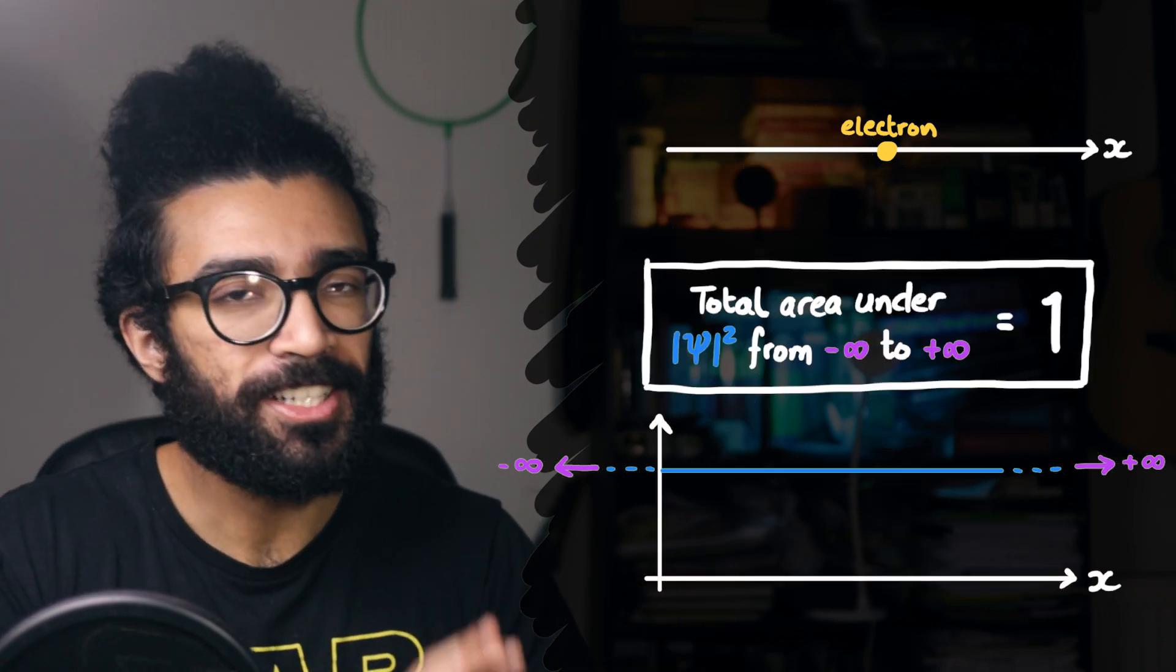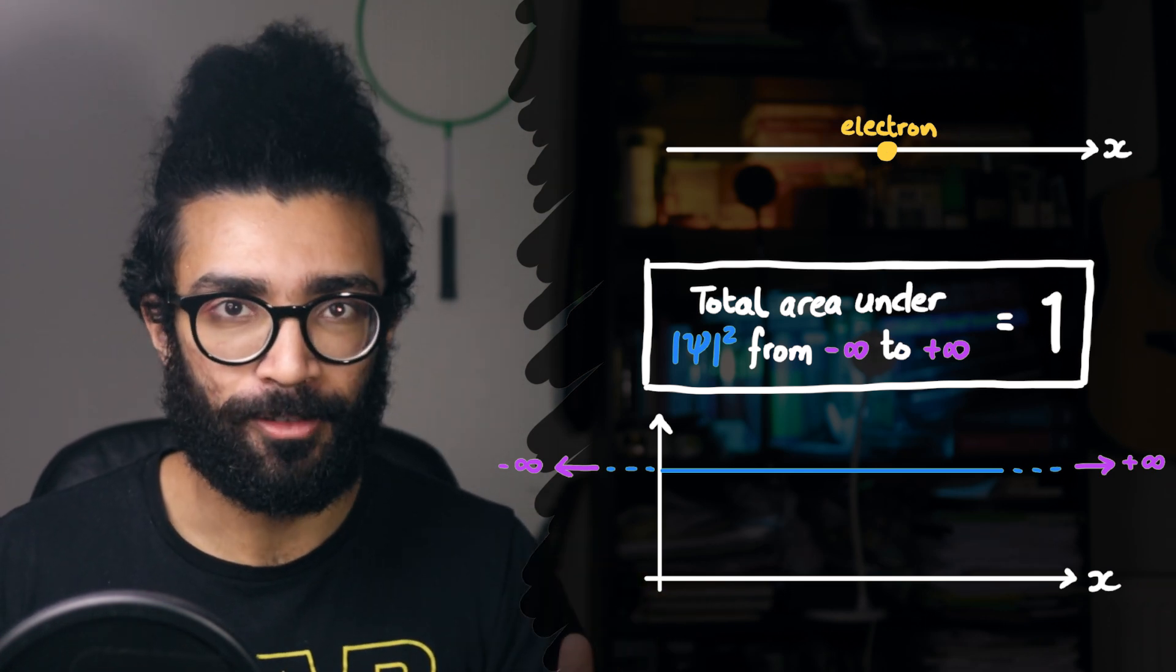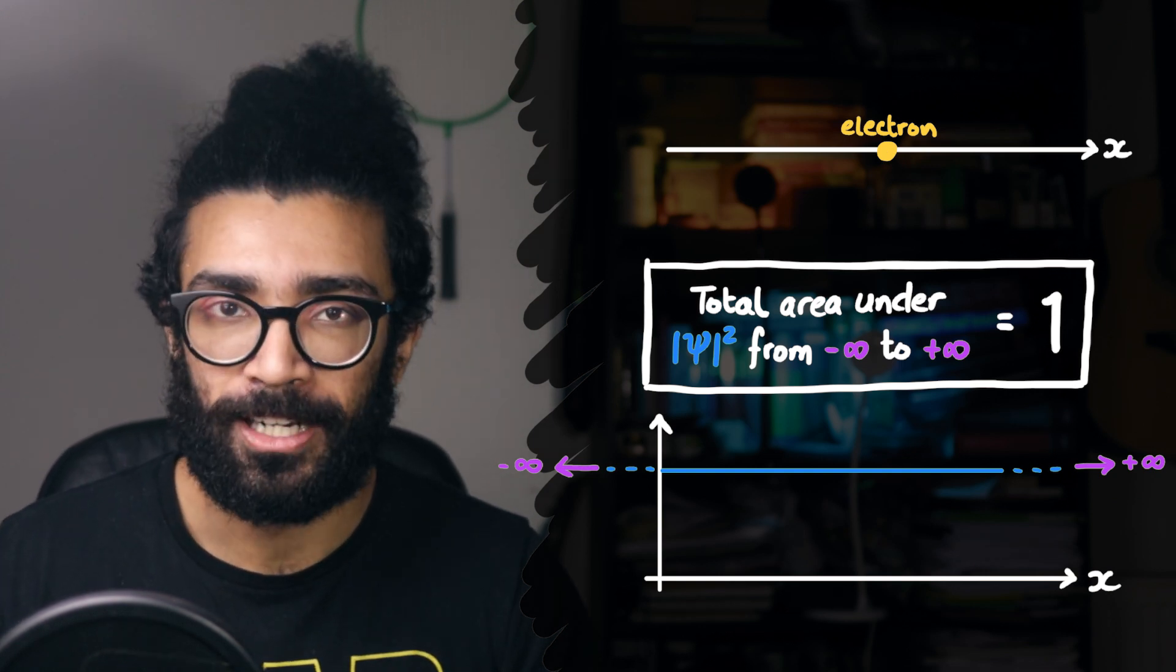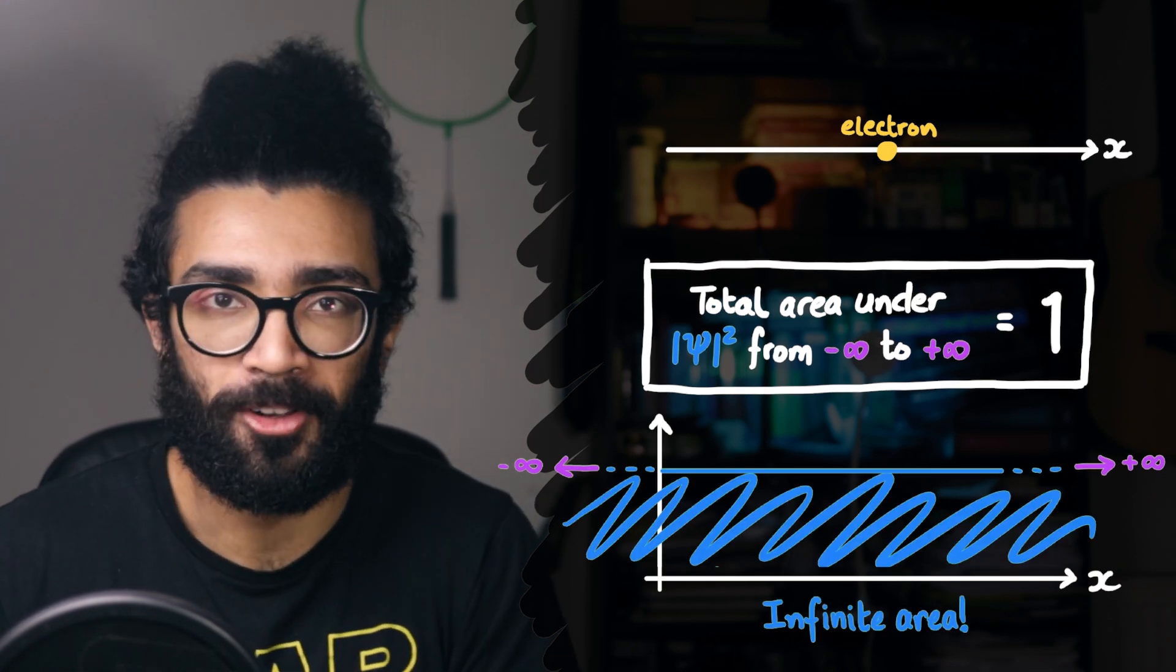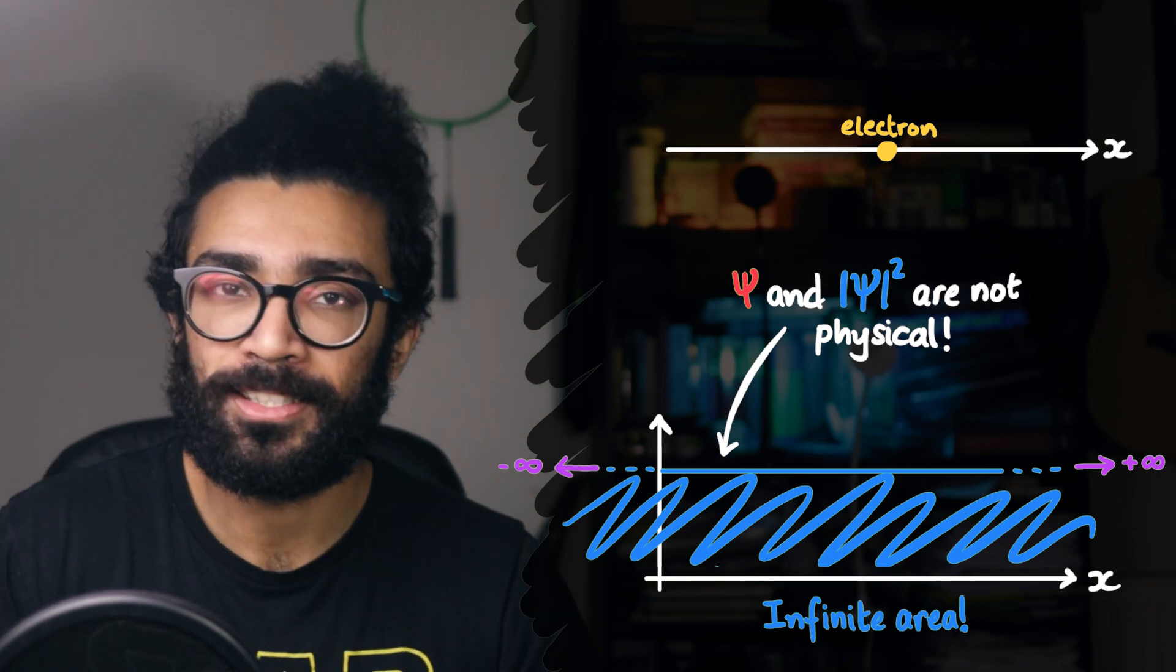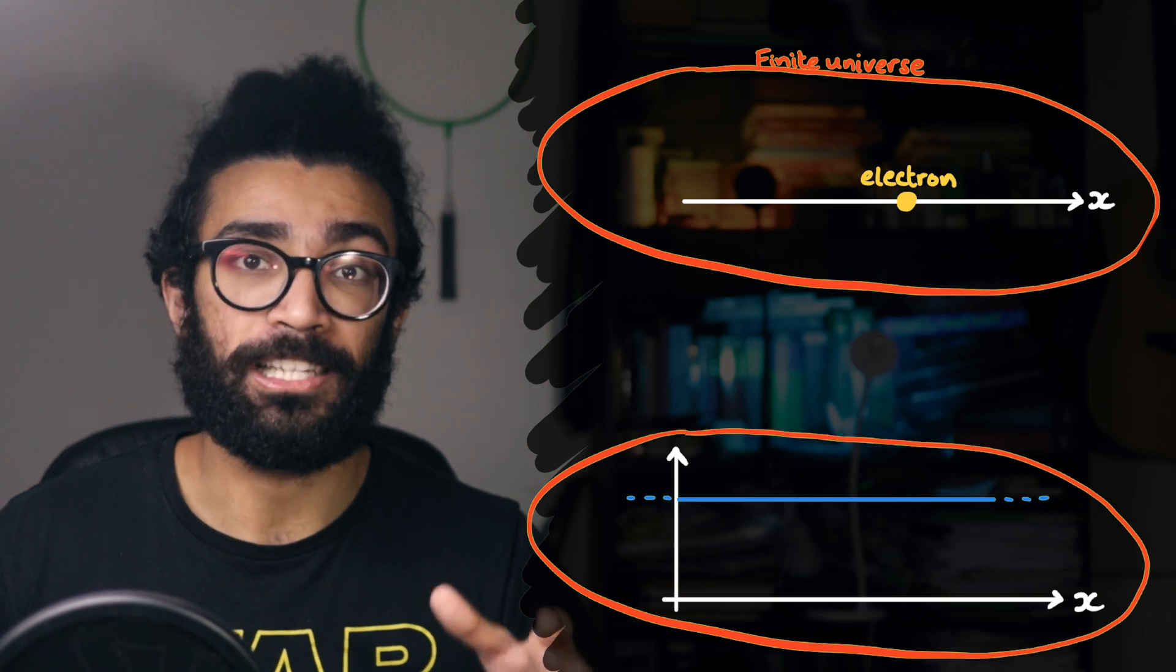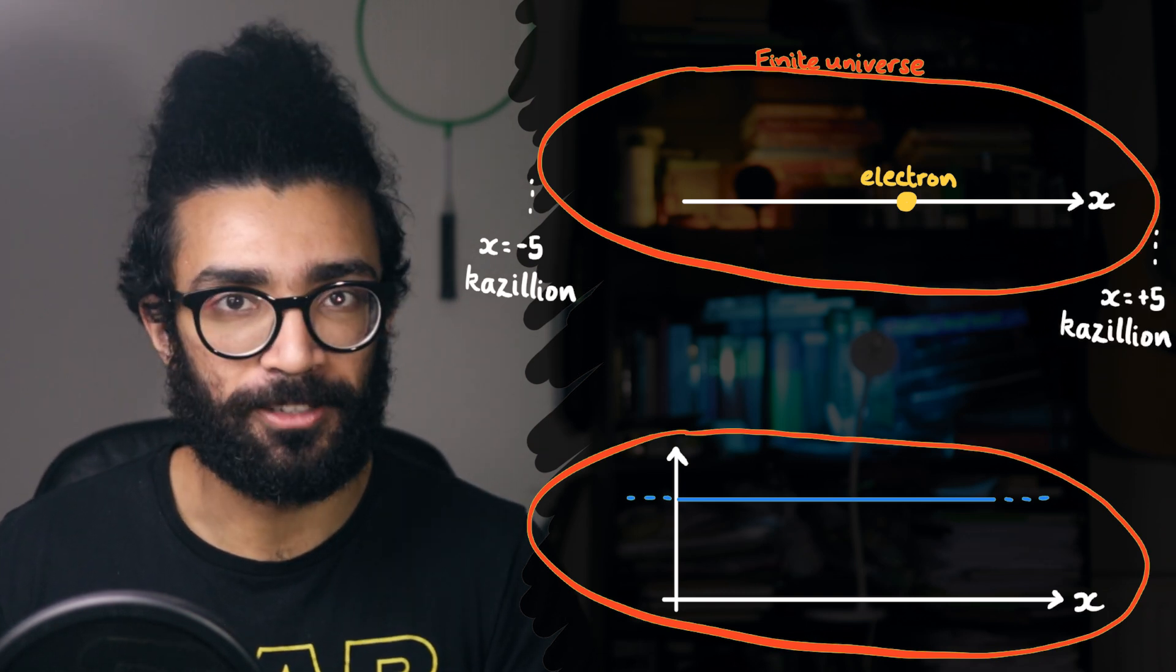Here's where we have a slight problem. That condition that we just found out, the total area underneath our graph, must be equal to 1 if we're looking at it all the way from negative infinity to positive infinity, cannot hold for this particular wave function or wave function squared. Because if this flat line goes on forever in both directions, to the left and to the right, then the area underneath that graph is going to have to be infinite, and infinity can't be equal to 1. Now, the good thing is that this particular wave function and wave function squared are not physical. It's not a good description of anything in our real-life universe. There are two ways that I can think of to make this a bit more physical.